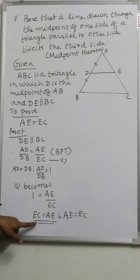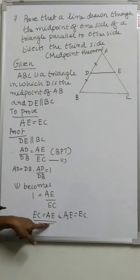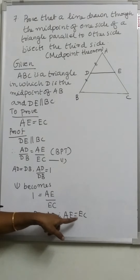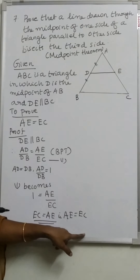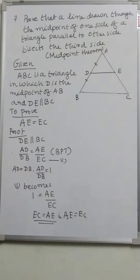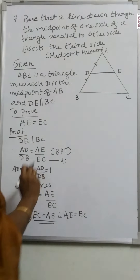Therefore, by cross multiplication, EC is equal to AE. That is, AE is equal to EC. Therefore, E is the midpoint of AC.